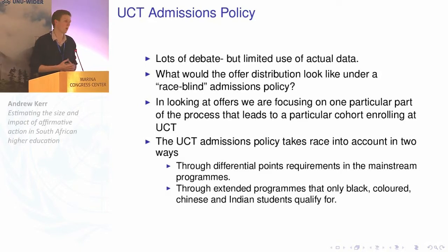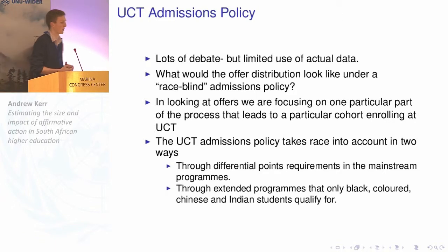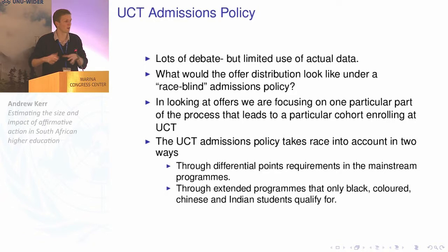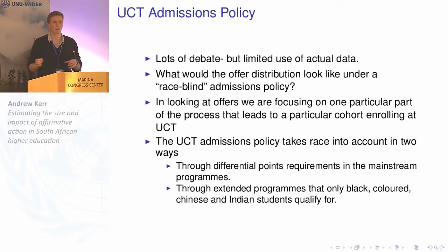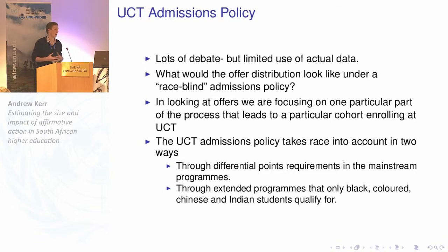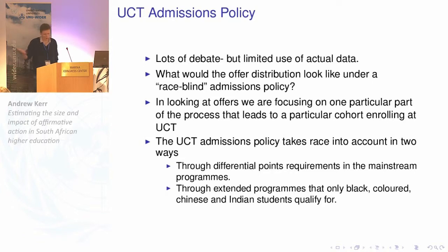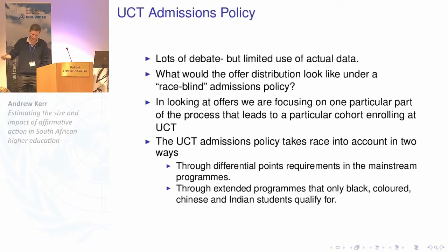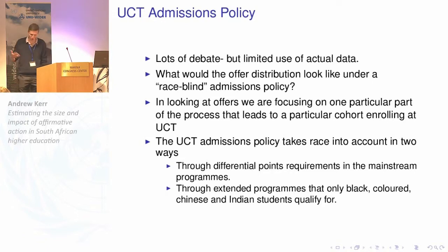So we're trying to answer a number of questions. First, what would the distribution of offers to applicants look like if there was a race-blind admissions policy? We're focusing on applications and offers made to students, not whether they end up taking those offers. How the admissions policy works at UCT is that black students, and to a lesser extent colored and Indian students — we still use these racial categorizations in South Africa — can get into mainstream programs through lower points requirements, so they need less good secondary school results to get in.